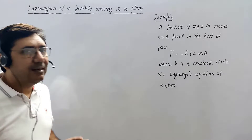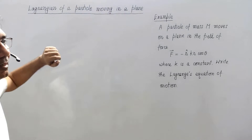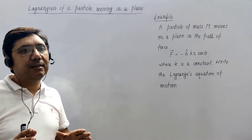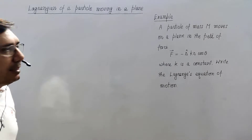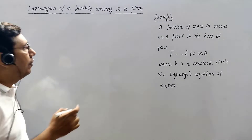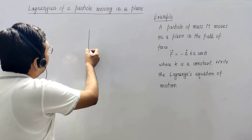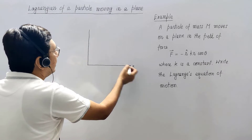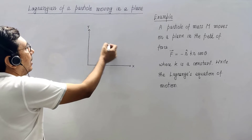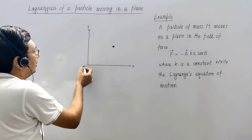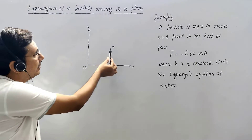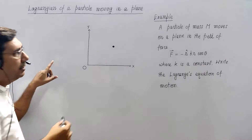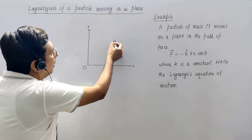Today in this concept video I am going to discuss how to write down the Lagrangian for a particle that is moving in a plane. Basically, if a particle is moving in a plane then its Lagrangian can be written in two forms. Suppose this is the xy plane, with x axis and y axis, and a particle is moving in the plane. We can write the motion either in terms of Cartesian coordinates.